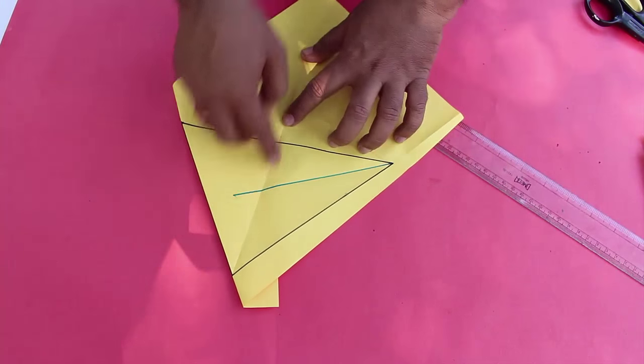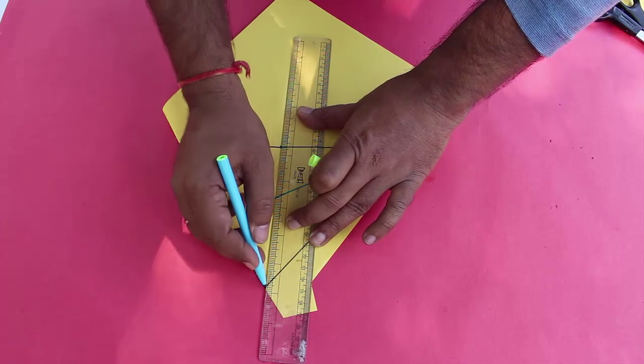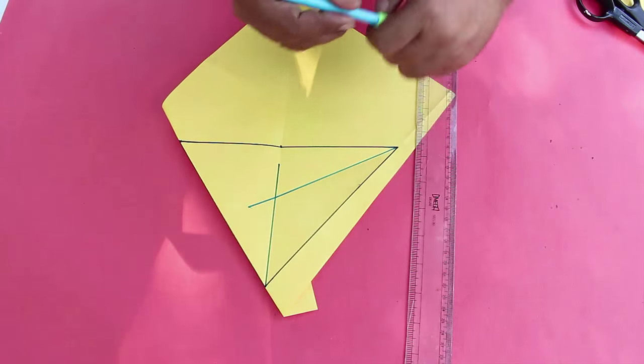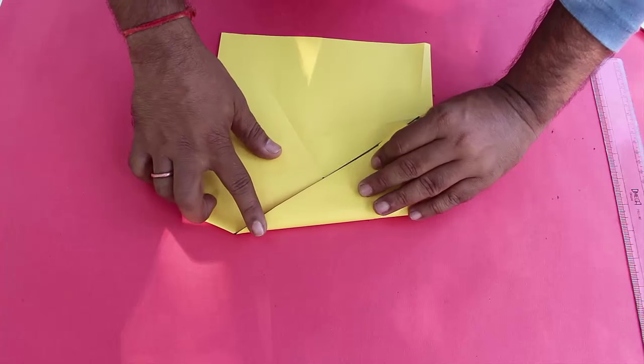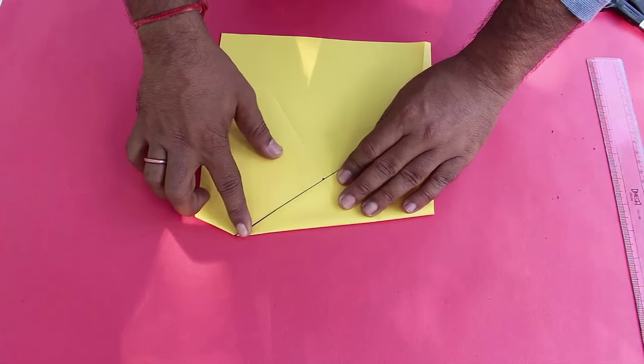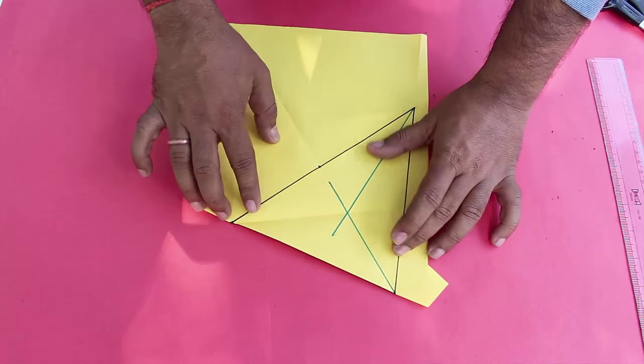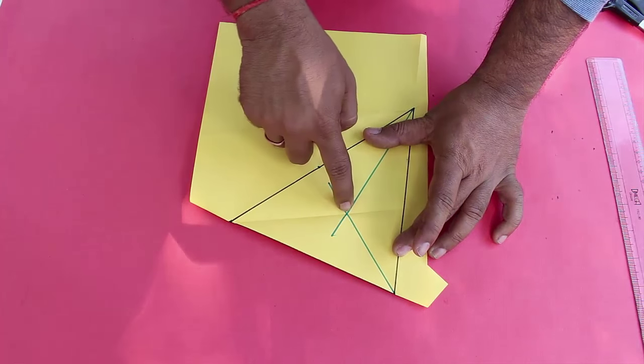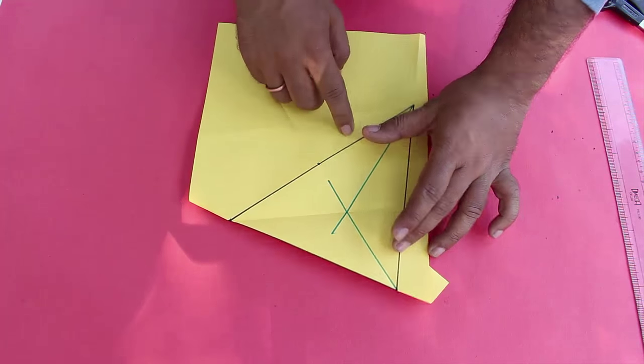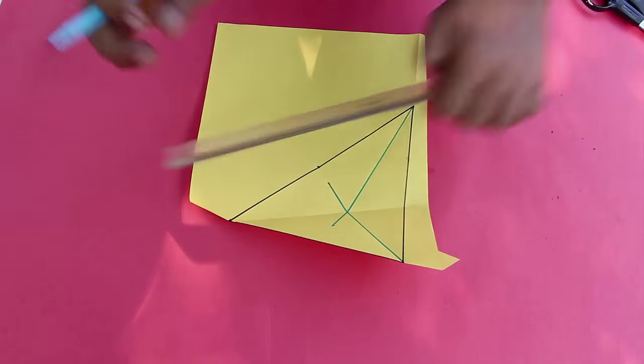Draw this second angle bisector also with a pen. Finally place C side on side A and fold to bisect the third angle. Draw this third angle bisector also with a scale and a pen.